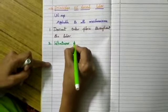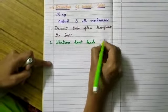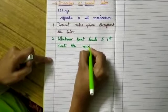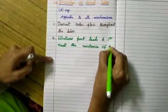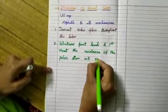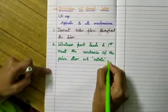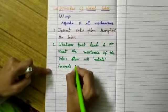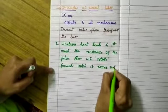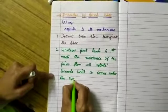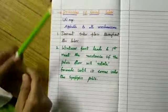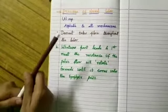Second principle: whatever part leads first and meets the resistance of the pelvic floor, it will rotate forwards. So this side will rotate forwards until it comes under the symphysis pubis.